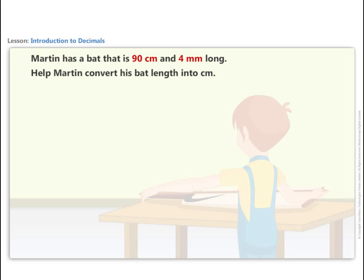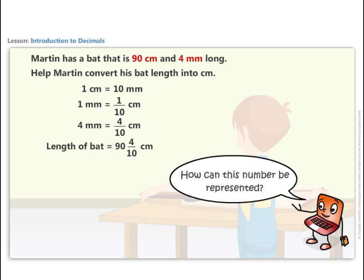We know that 1 centimeter is equal to 10 millimeters, or 1 millimeter is equal to 1 by 10 centimeters, which makes 4 mm as 4 by 10 centimeters. So length of a bat in centimeters is 94 by 10 centimeters. How can this number be represented?